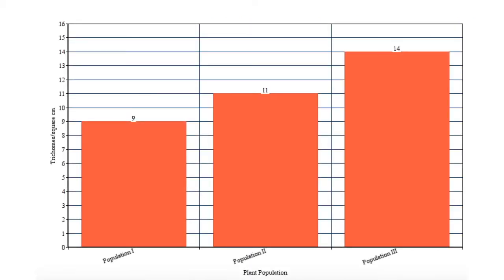So we're just going to make a graph. We're going to graph the mean trichomes per square meter of each of these three populations, and it should look something like this. What you need to remember to include is to have the scale on the y-axis, and have the x-axis and the y-axis labeled correctly, and have each of the bars labeled correctly.